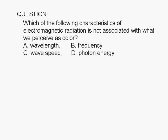Which of the following characteristics of electromagnetic radiation is not associated with what we perceive as color? A. Wavelength, B. Frequency, C. Wavespeed, or D. Photon Energy.